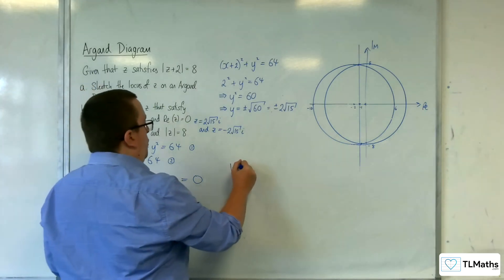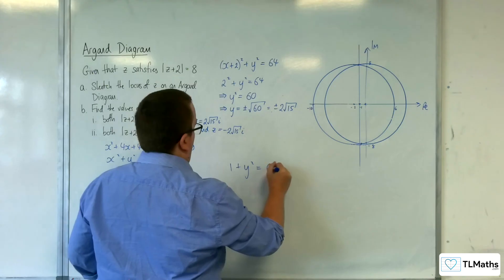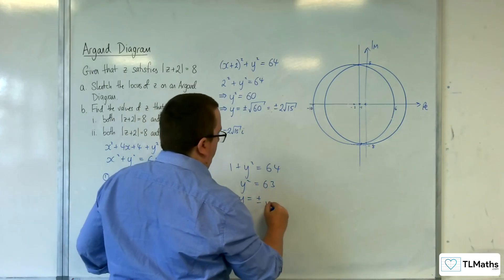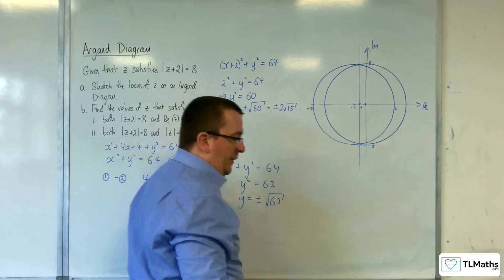So, minus 1 squared is, of course, 1. So, y squared is equal to 63. So, y is equal to plus or minus the square root of 63.